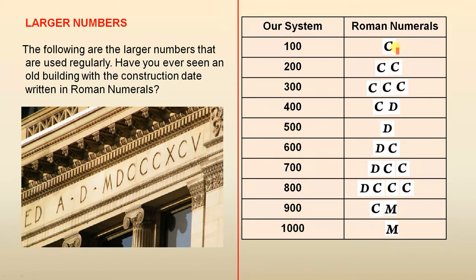So 100 is a C. 200 is two of them. 300 is three of them. So that's the maximum we can have. 400. Now D is 500, so 500 take away 100 is 400. So there's D for 500. 600 is 500 plus 100. 700 is 500 plus 200. 800 is 500 plus 300.